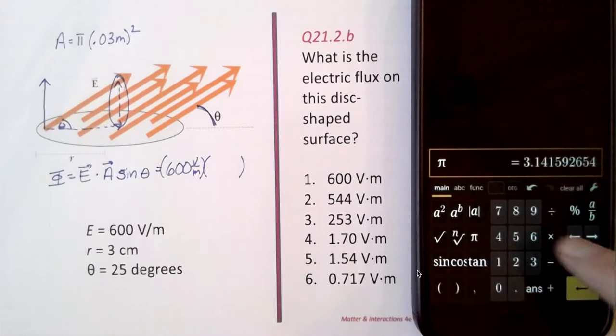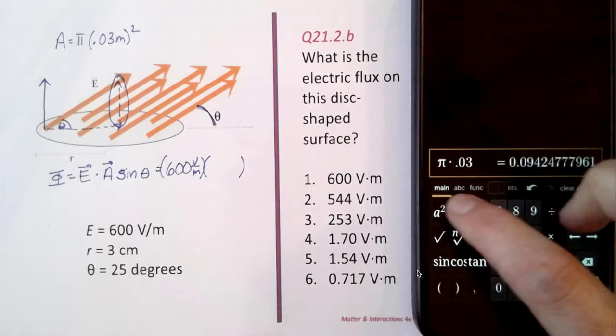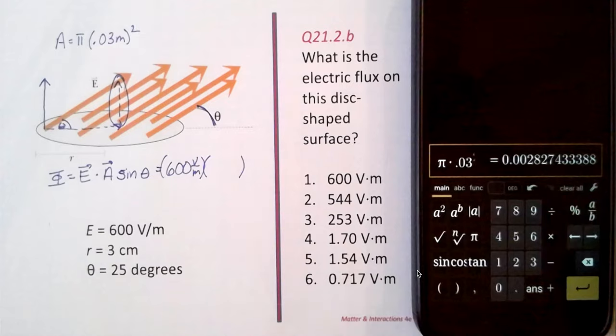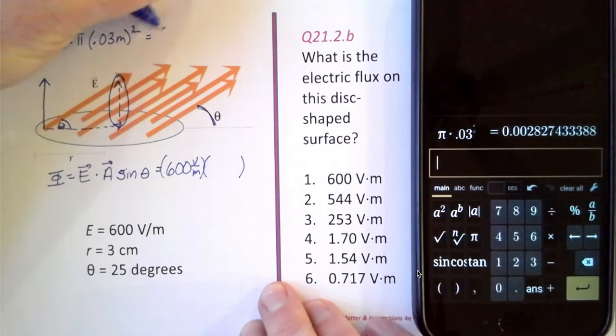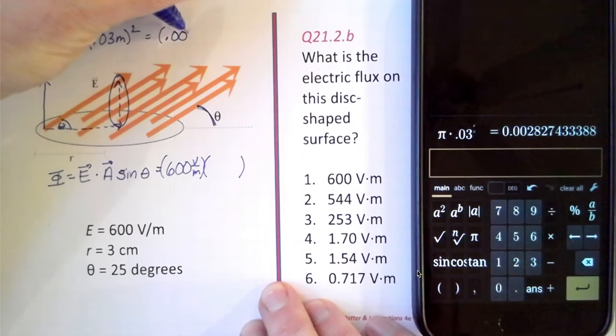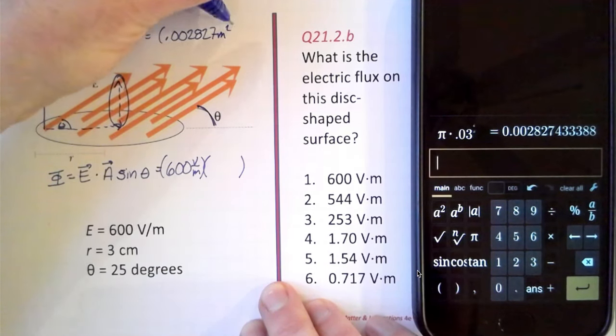So pi times 0.03 squared, and that gives us 0.002827 square meters.